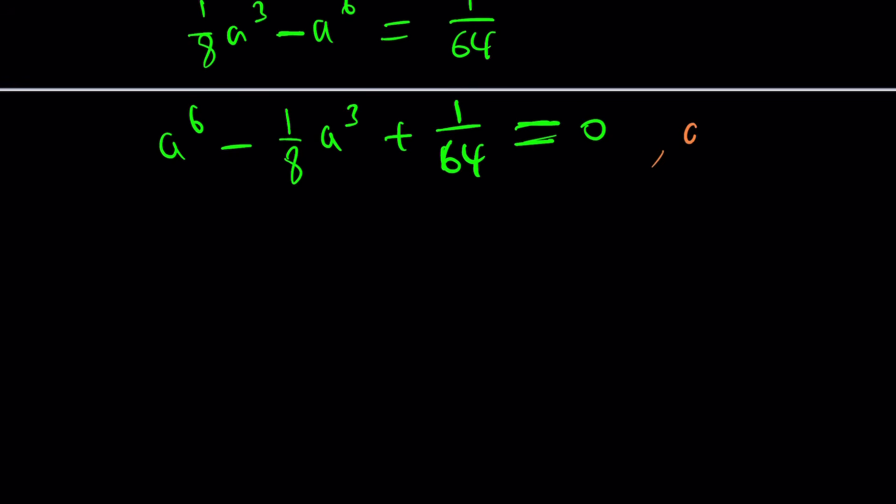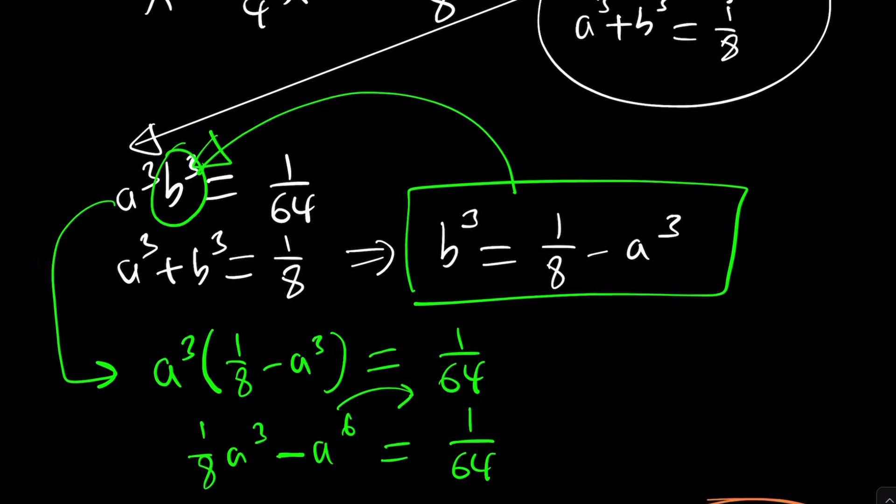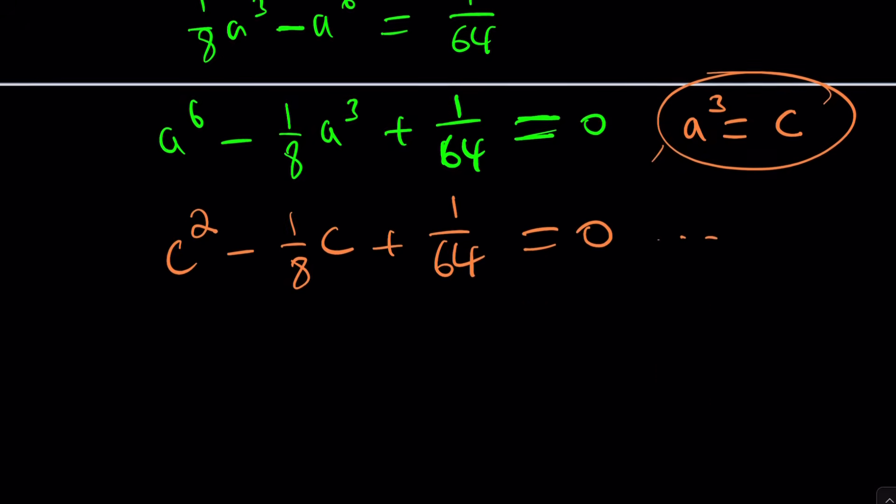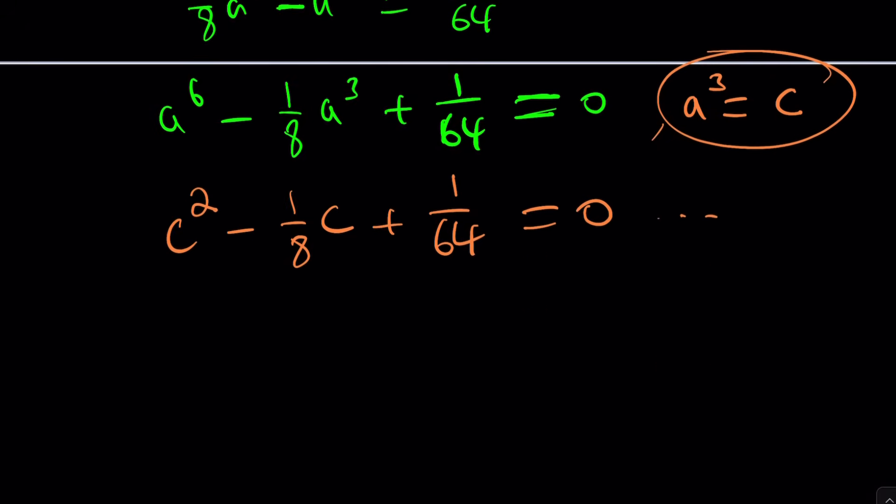So now we're going to use substitution. Replace a cubed with c. That gives you c squared minus 1 over 8c. You see that's a quadratic. And we can solve it using the quadratic formula. And then cube rooting will give you the value of a and b. And then a plus b is going to give you x. So on and so forth. Too much work. Obviously. That's why it's the first method. It's the boring one. It's the cubic formula.